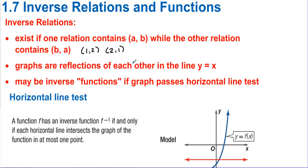Graphs of inverse relations are reflections of each other in the line Y equals X. So if we had the function Y equals the square root of X, and here is the line Y equals X, then its inverse will be a reflection over that line.